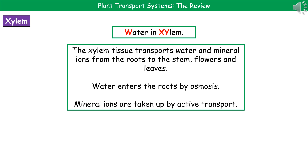Welcome to our review on plant transport systems. The first type of transport system in plants is in the xylem tissue. We need to remember what's transported in the xylem, and the easy way to do this is with the alphabet — water is transported in xylem, so W, X, Y, just go with the alphabet: water in xylem.